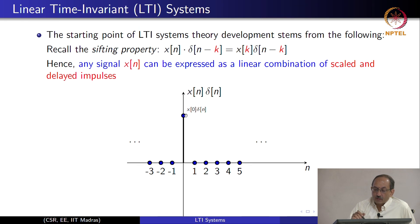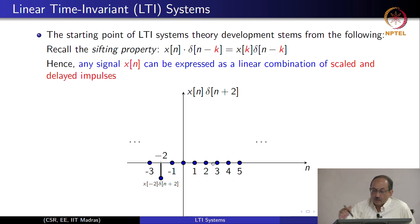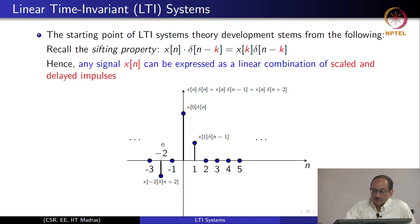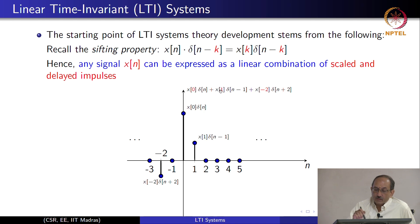x(n) times delta(n) picks out x(0); x(n) times delta(n minus 1) picks out x(1); all other samples are 0. Similarly, x(n) times delta(n plus 2) picks out the sample at minus 2. If you consider these products together, they pick out the individual samples at those locations.